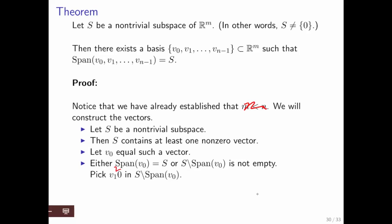Then, either the span of that one vector is all of S, or there is some vector in the complement of the span of v_0 in S. This here just says there is some vector that is in S, but not in the span of v_0.